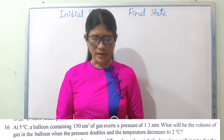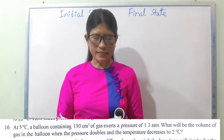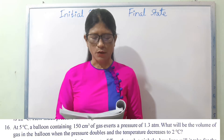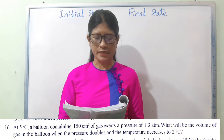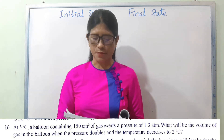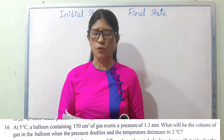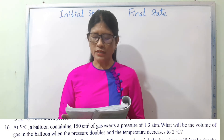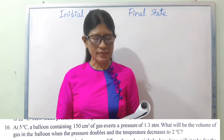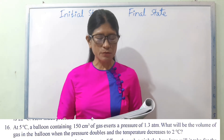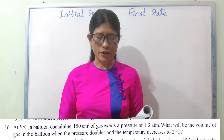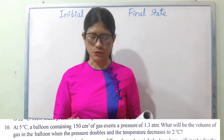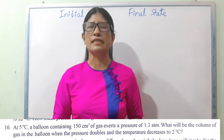Number 16: at 5 degrees Celsius, a balloon containing 150 cm³ of gas exerts a pressure of 1.3 ATM. What will be the volume of gas in the balloon when the pressure doubles and the temperature decreases to 2 degrees Celsius?